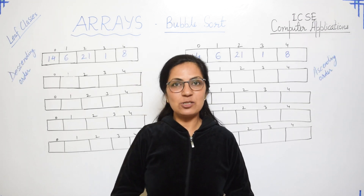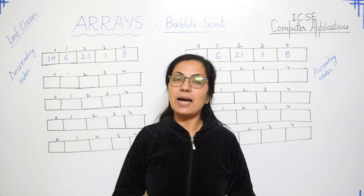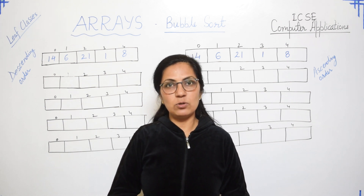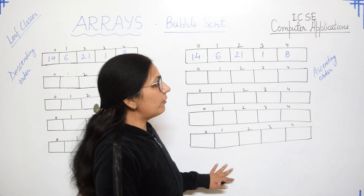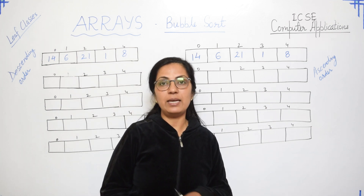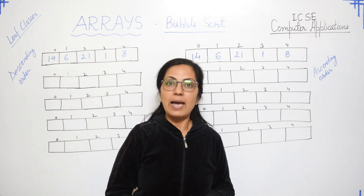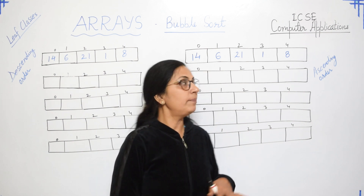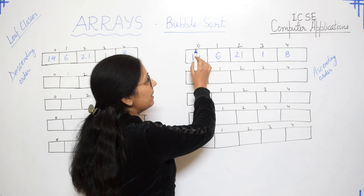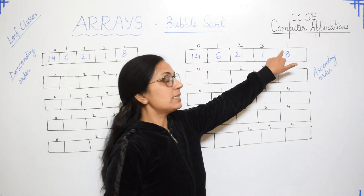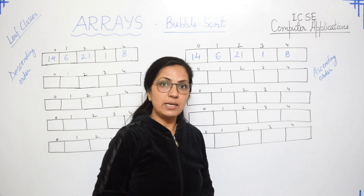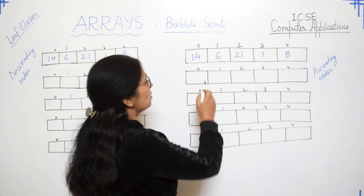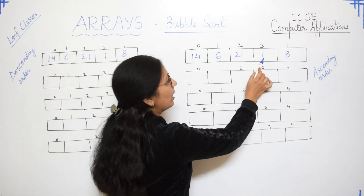The question can be asked for bubble sorting to arrange the array elements in either ascending or descending order. The size of the array is normally given in the question — maybe 10 or 20. But here for the explanation, I have taken 5 array elements, so the array size is 5. The subscript always starts from 0 and the last subscript is size minus 1, so if size is 5, the last subscript is 4. The array elements are 14, 6, 21, 1, and 8.